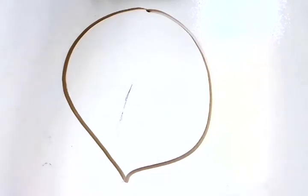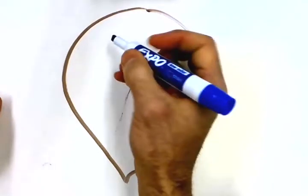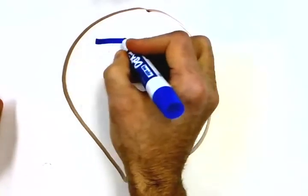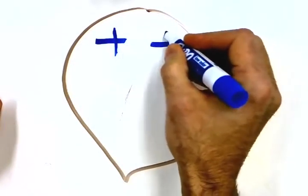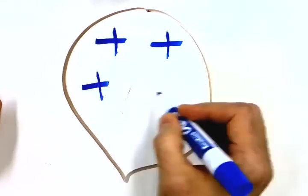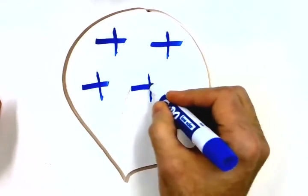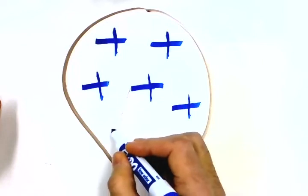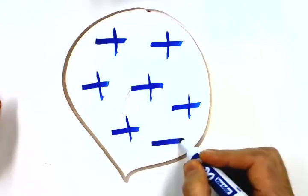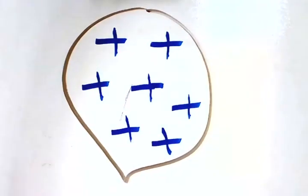Whenever we draw a charge diagram, we begin by drawing the positively charged particles, which represent the atoms minus one electron. We draw enough of these to fill up the object. Don't draw them too small or else you have too many. There, that looks pretty good.